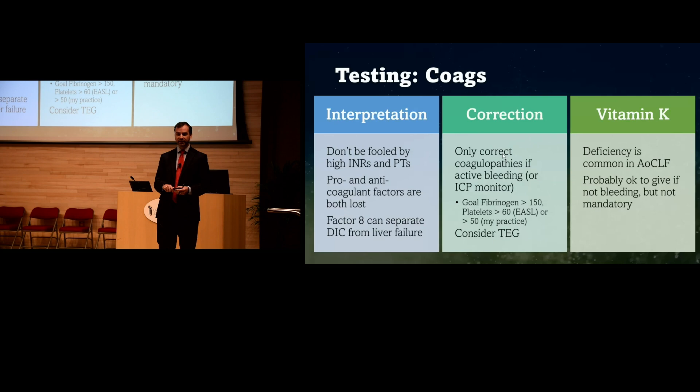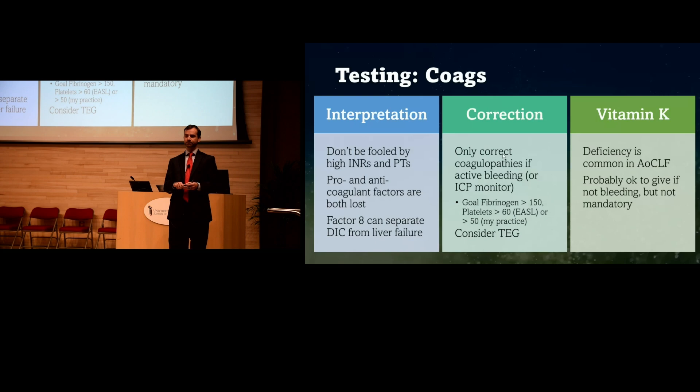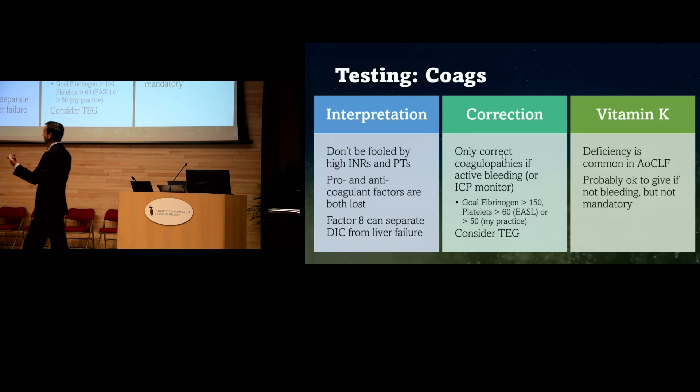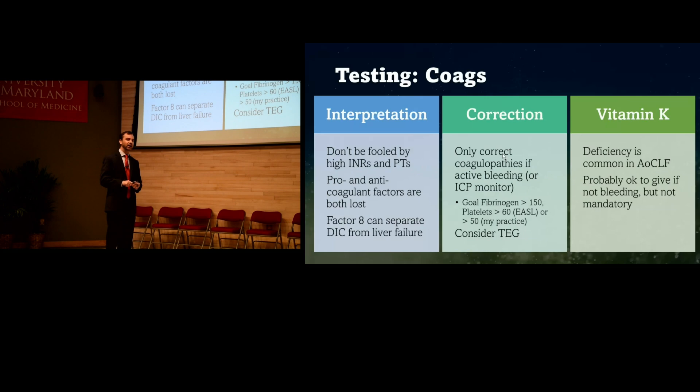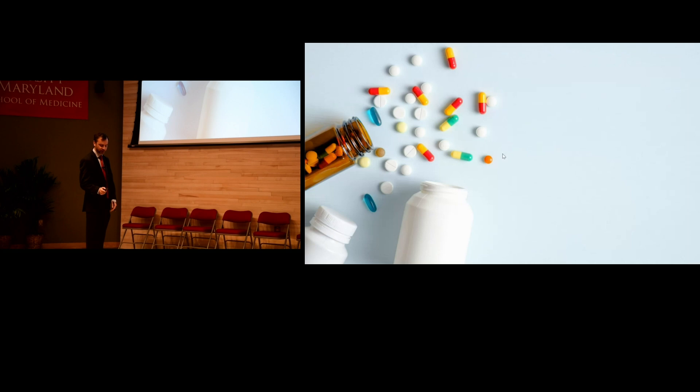Do not correct coagulopathies unless you have active bleeding — the INR is abnormal because of their liver, not necessarily indicating bleeding risk. An exception is if they're going to have an ICP monitor placed for hepatic encephalopathy. If you do have to correct, try to keep fibrinogen over 150 and platelets over 50 to 60. Many of these patients are also vitamin K deficient, especially chronic liver failure patients.